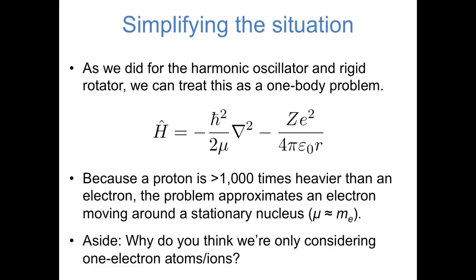Why do we only consider one-electron atoms and ions to start? The answer is that the more particles we add, the more potential energy terms we add. If we had two electrons, we would need not only potential energy terms between the nucleus and each electron, but also a potential energy term representing the repulsion between the two electrons. Electron-electron repulsion makes things much more complicated. In future videos, we'll talk about how to approximately solve the Schrödinger equation with electron-electron repulsion, but it turns out it's not even possible to exactly solve the Schrödinger equation when there's more than one electron.